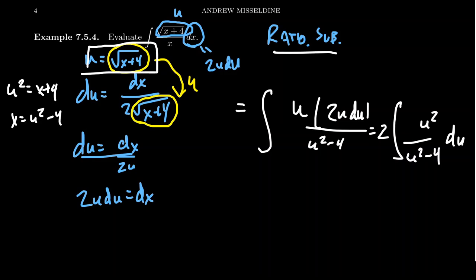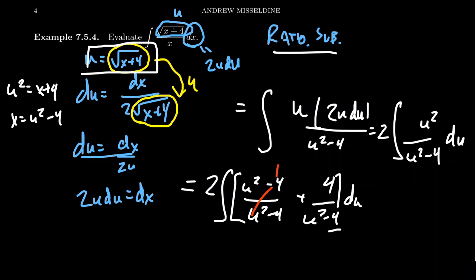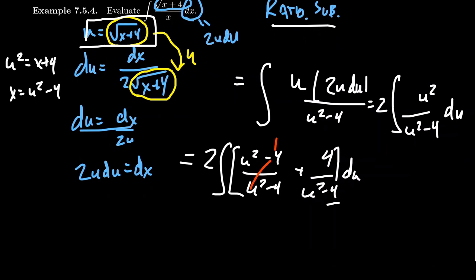Since the degree of the numerator equals the degree of the denominator, I'll do short division. Dividing u² by (u² − 4): we get 1, and since we subtracted −4 we need to add 4 back, giving u²/(u²−4) = 1 + 4/(u²−4). The first fraction simplifies to 1; the second piece needs more work.